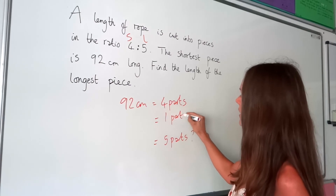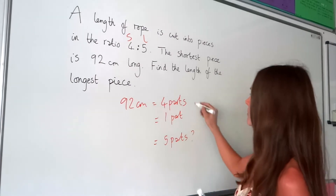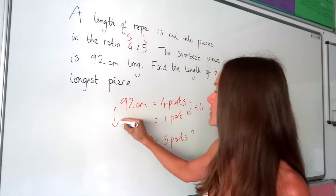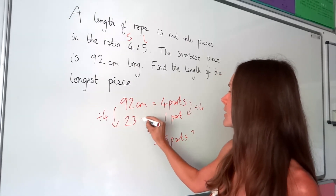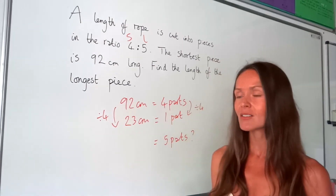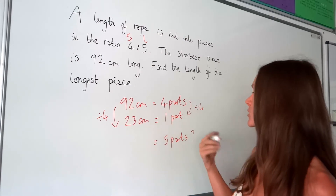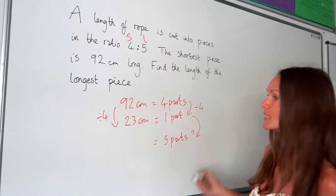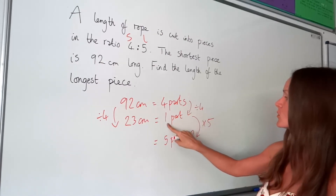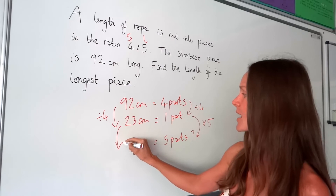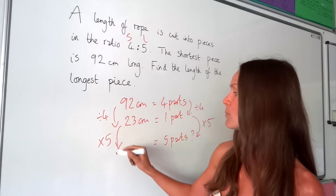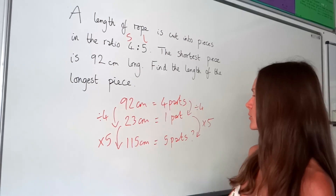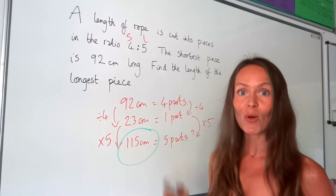Before finding five parts I need to work out the value of one part, just like in the previous examples. With four parts, to find one part I divide by four - four divided by four is one. So I divide 92 by four, which gives 23 centimeters. One part equals 23 centimeters. The longer piece is five parts, so I multiply 23 by five, which gives 115 centimeters. That's the length of the longer piece of rope.